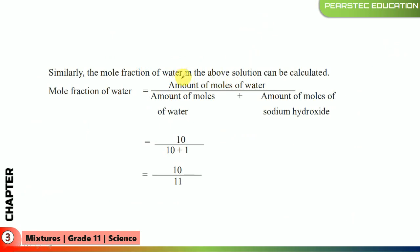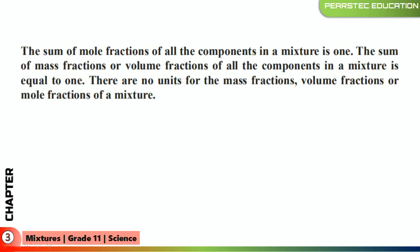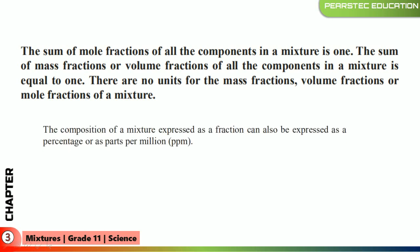Similarly, the mole fraction of water in the above solution can also be calculated. Moles of water is 10, total moles is 10 + 1, giving 10 over 11. The sum of all mole fractions must always equal 1. This rule applies similarly: the sum of mass fraction, volume fraction, or mole fraction of all components in a mixture is always equal to 1. There are no units for mass fraction, volume fraction, or mole fraction.